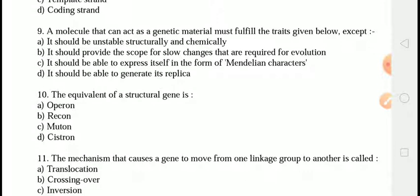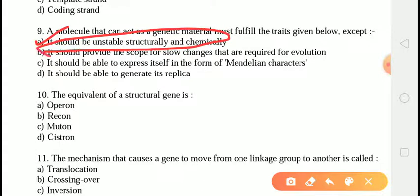The next question is: a molecule that can act as genetic material must fulfill the traits given below, except which one? The correct answer is answer A — it should be unstable structurally and chemically. This is the trait genetic material should NOT have. The genetic material should be structurally and chemically stable; otherwise its expression will change, leading to the loss of several metabolic functions. Therefore, it must not be unstable.